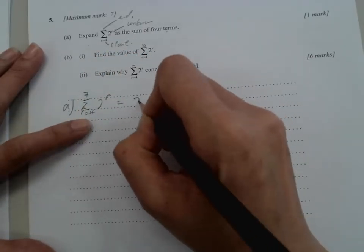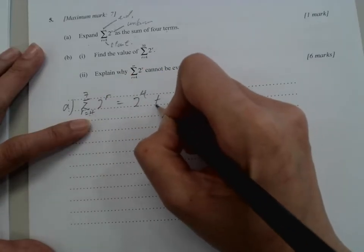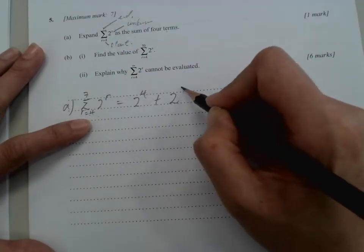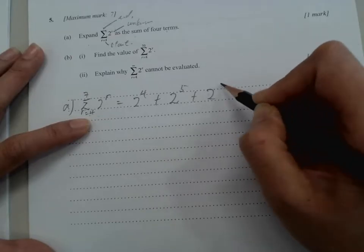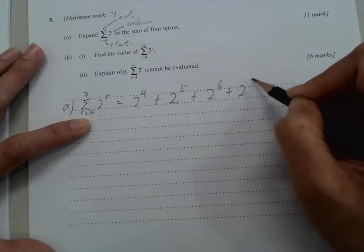Part a will become starting from 4. Then summation is plus, so starting from 4 and then 5, 6, and 7. That's what we need.